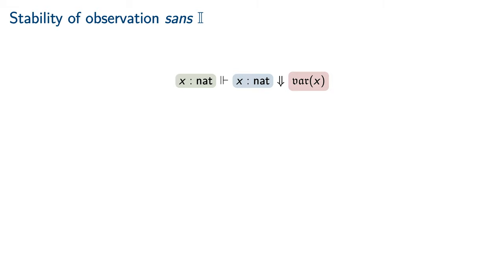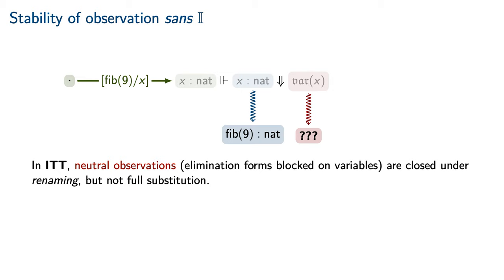In addition to the question of what contexts observations are made in, we must also consider under what context substitutions those observations are stable. Consider the case of computing the normal form of a variable of type nat. We may restrict along the substitution that replaces the variable x with the ninth Fibonacci number. We do not, however, have a way to restrict the observation of the normal form of x along this substitution without performing an entirely new normalization. In contrast, we can restrict the existing normal form along a substitution of variables for variables.